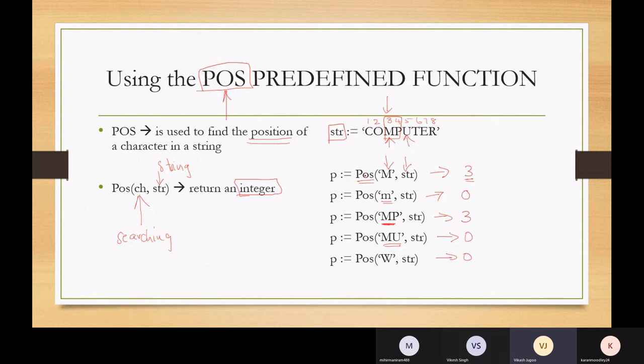So when you use Pos, it's going to find the position of some character in a string. And when it finds it, it just returns the value as an integer. It can look for a pattern, a sequence of characters, a pattern. But the exact pattern must be found.